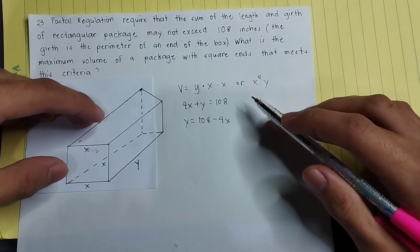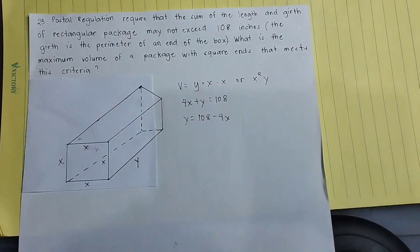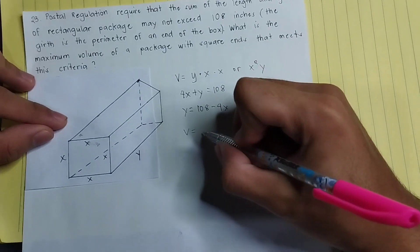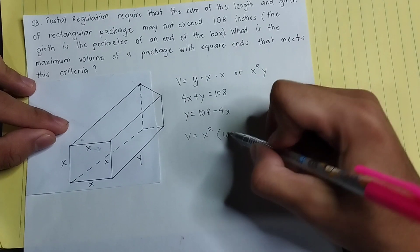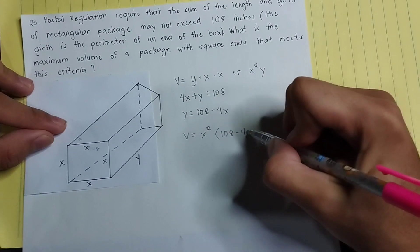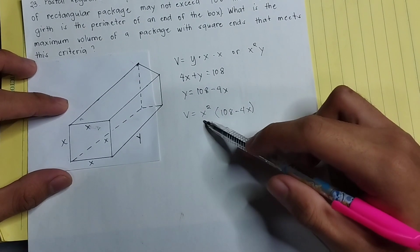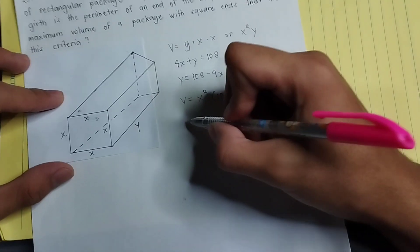And then to find the function we will differentiate, we can say that V equals x squared times (108 minus 4x).